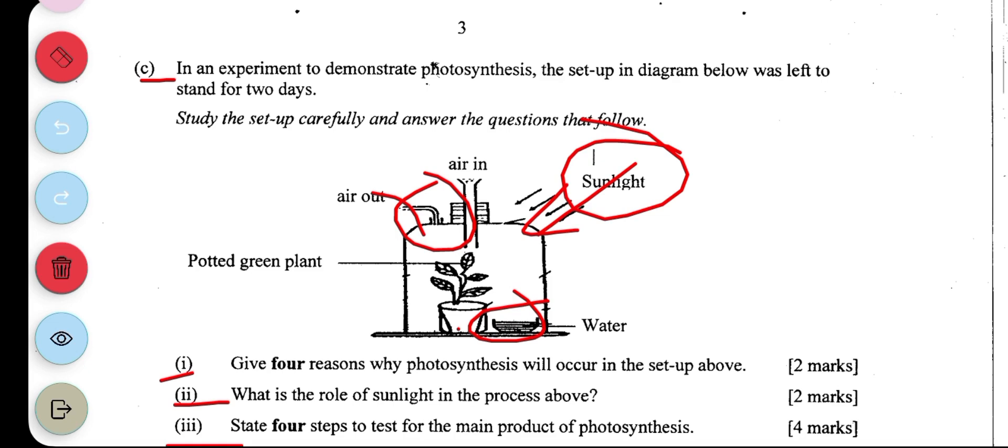State four steps to test for the main product of photosynthesis. The main product of photosynthesis is starch. The test for starch: the leaf is boiled in boiling water to kill all the germs and stop chemical reactions. That's the first step. Two, it is placed in alcohol and heated to remove the chlorophyll and dechlorize the leaf.